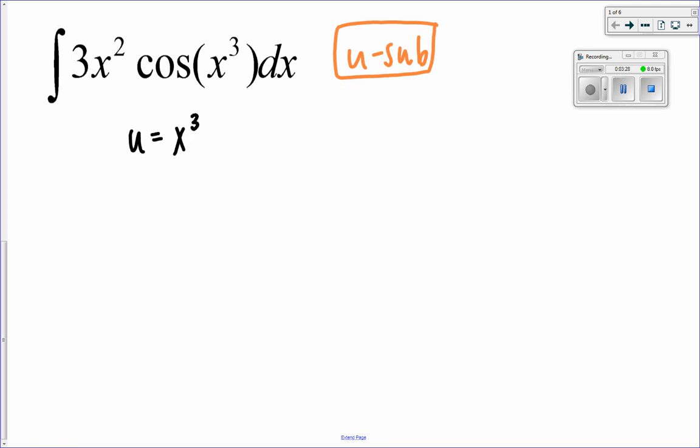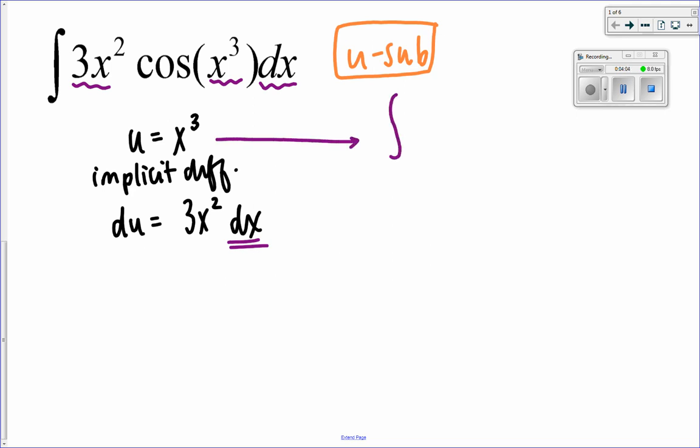U will always be something in the problem. I am going to then use implicit differentiation to find the derivative of this, or du is equal to 3x squared dx with respect to x. And I am going to solve for dx here.